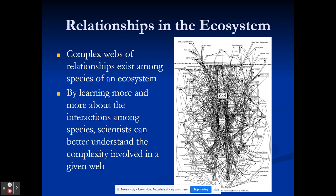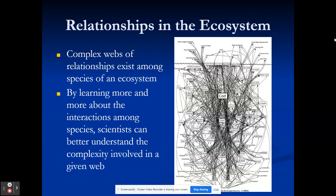Remember, relationships in ecosystems are pretty complex. We've done simplified versions, but as you can see in the diagram right here about cod, it can be a pretty complex system. The more that we look at these systems and their complexity and all their connections, the more we can understand what's actually happening. We can see how important one species is to another.